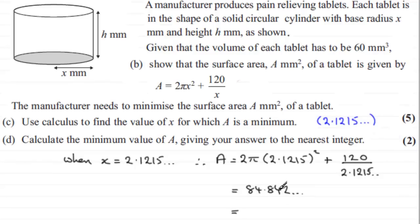But we've got to give this to the nearest integer. So this is going to be 85. And we'll just put here to nearest integer.